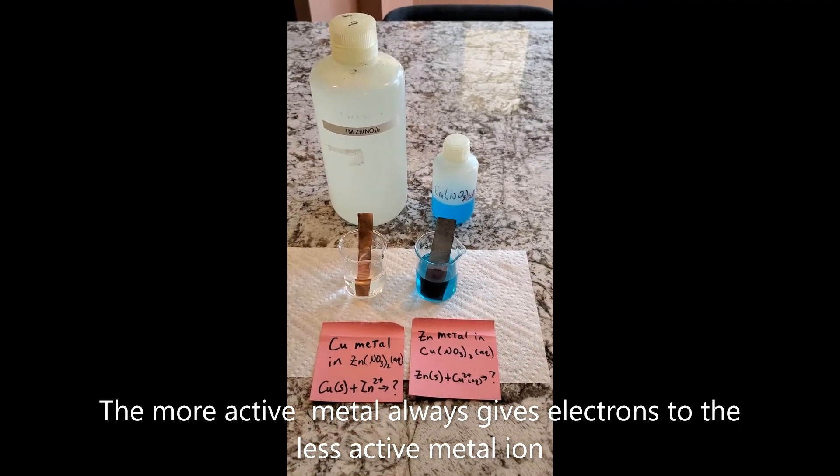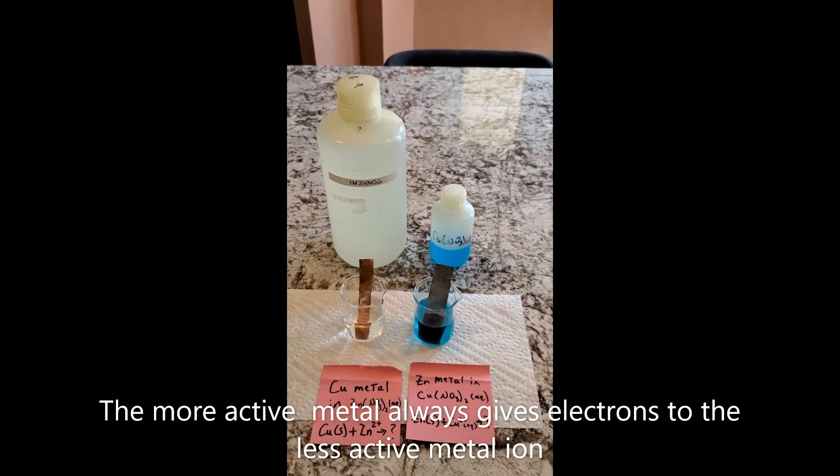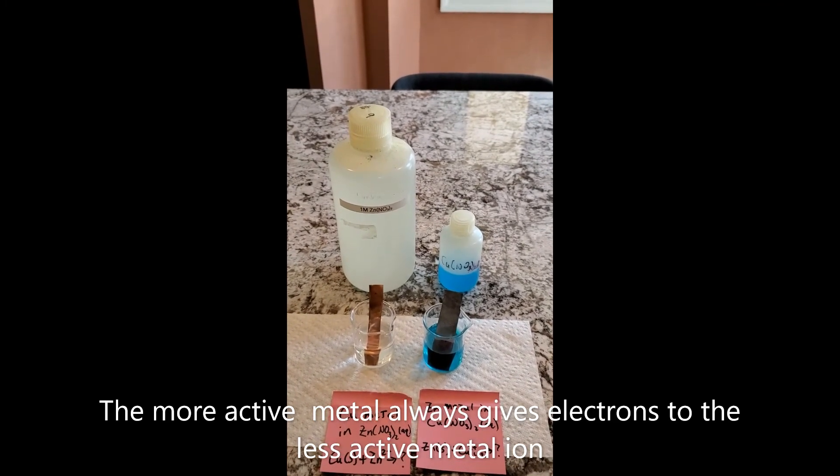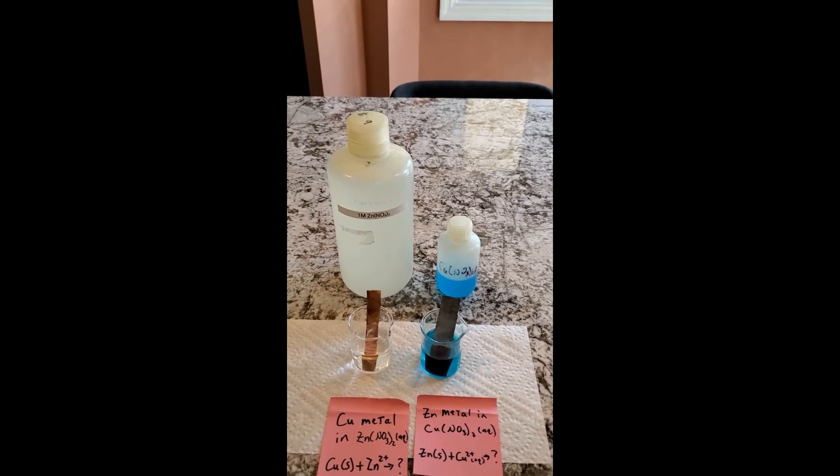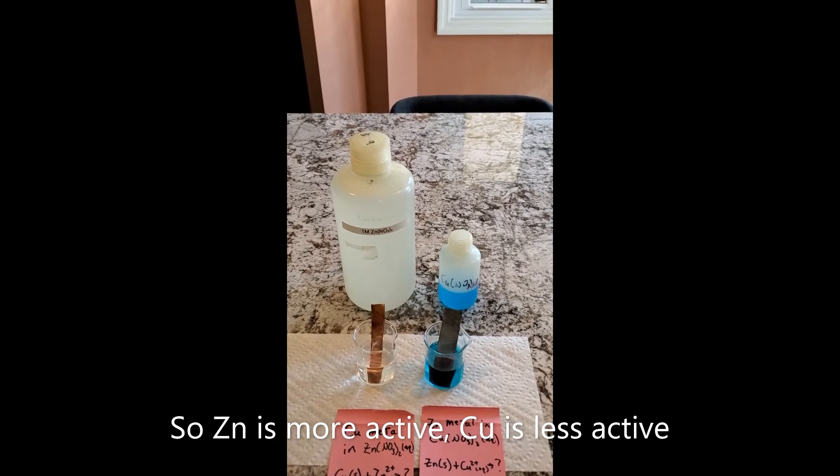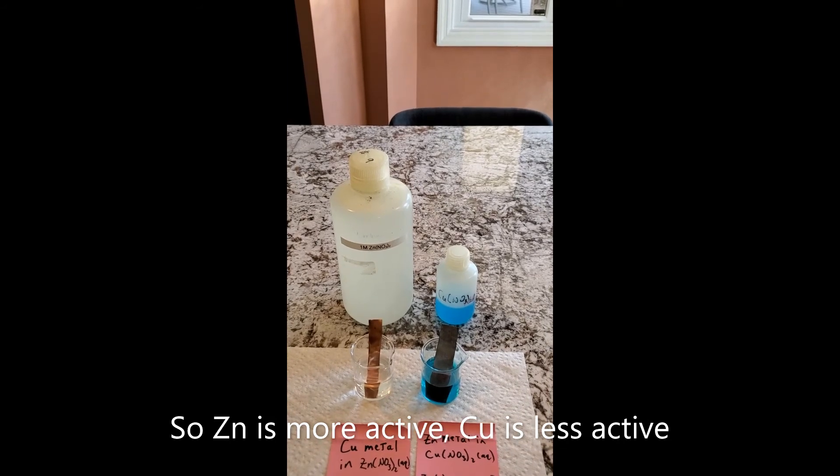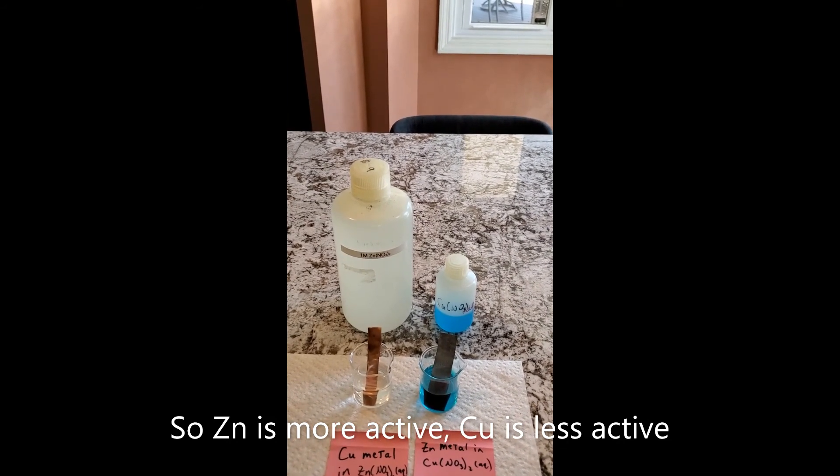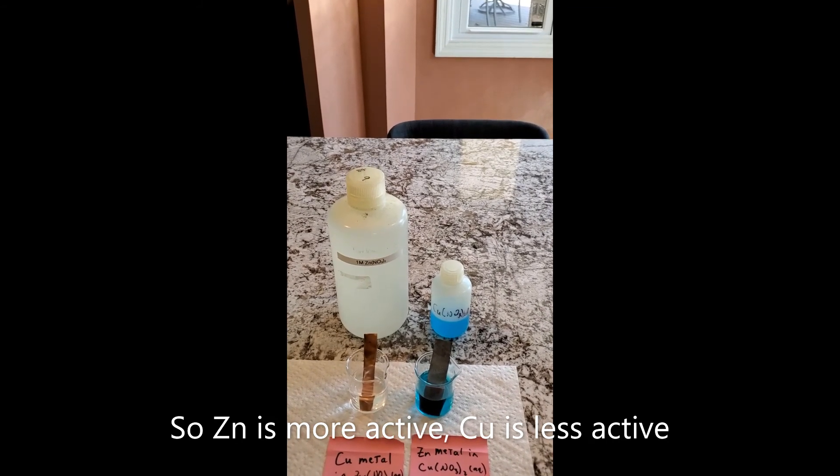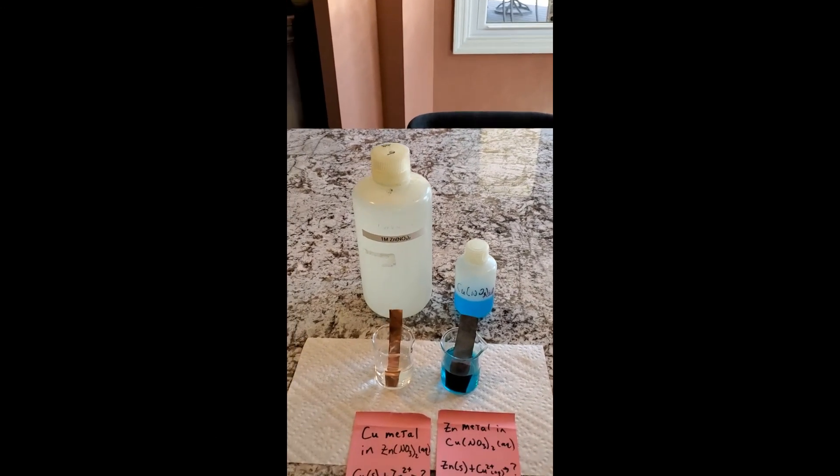When we talk about a metal's activity, we are referring to how much it wants electrons. Copper wants electrons much more than zinc does. So if copper two plus gets around zinc metal, the copper two plus will just take zinc's electrons and that makes the copper precipitate out as the metal. The zinc goes into solution. So copper is less active; zinc is more active because it tends to react.